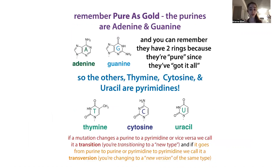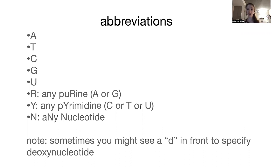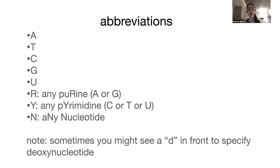Those are the main nucleobases. In terms of one-letter abbreviations, A, T, C, G, and U are straightforward, but if you don't know the sequence you can put an N to stand for 'any.' If you want to specify a purine, that's an R. A pyrimidine is a Y — so that's your C, T, or U. You might see this in the context of ordering a random primer or a consensus sequence where a protein likes to bind.